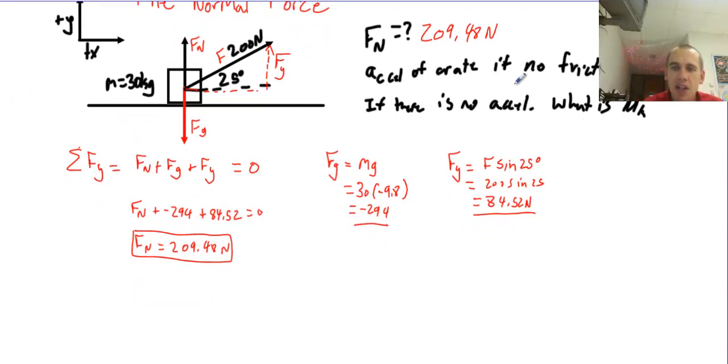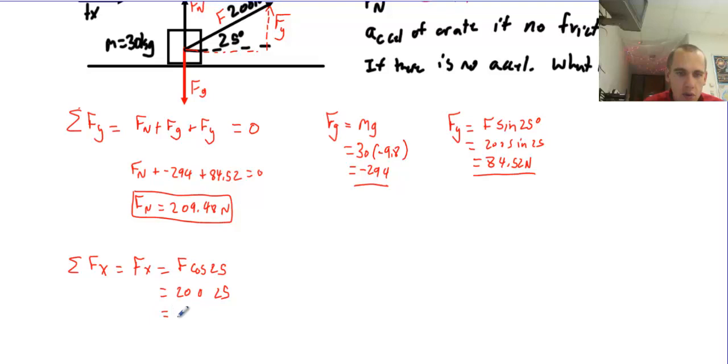Now, it says acceleration of the crate if there's no friction. If there is no friction, then the acceleration of the crate, I'm going to say the net force in X is just equal to Fx, which in this case would be F times the cosine of 25. But that is 200 cosine 25. And if I do that, 200 cosine 25, that is 181.3 newtons. So this equals 181.3 newtons.